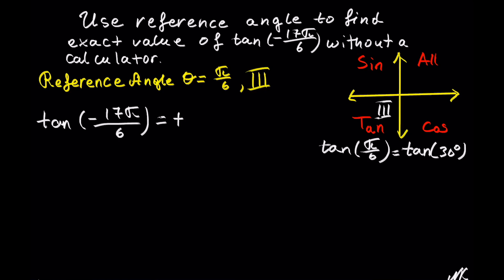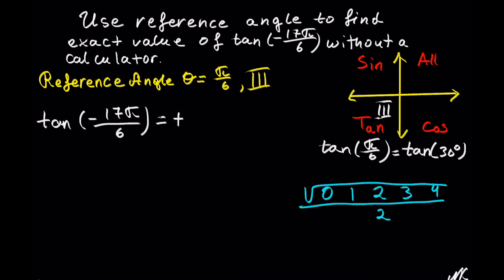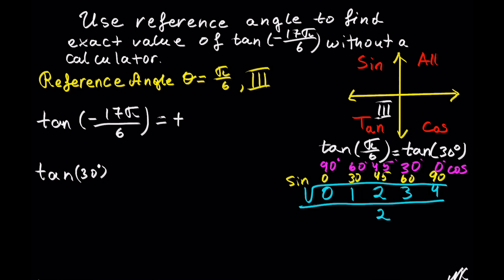Here's the reference table. You begin with 0, then 1, 2, 3, and 4. Take the square root of each and divide by 2. The reference for sine goes from left to right: sine of 0, 30, 45, 60, 90. The reference for cosine goes from right to left: cosine of 0, 30, 45, 60, 90. This whole thing is in degrees. The table does not give tangent directly; however, we can use the property that tangent of 30 degrees equals sine of 30 degrees divided by cosine of 30 degrees.